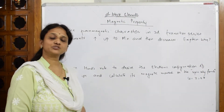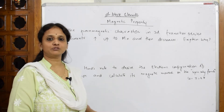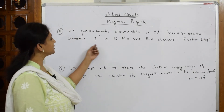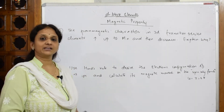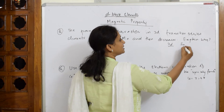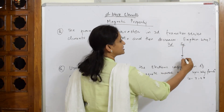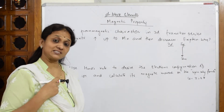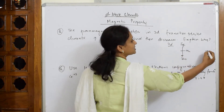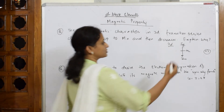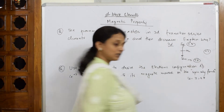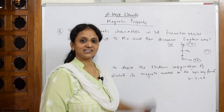Let us see two more questions based on magnetic moment — same concept, same formula, but different types of questions. The paramagnetic character in 3d transition elements increases up to manganese and then decreases. The 3d series starts from scandium and ends with zinc. Manganese shows the maximum oxidation state of +7, making it the cutoff point — oxidation states go from +3 up to +7, then come back down to +2.